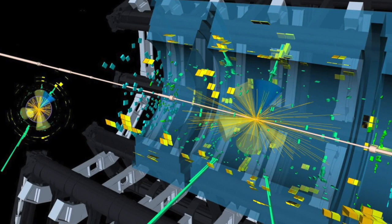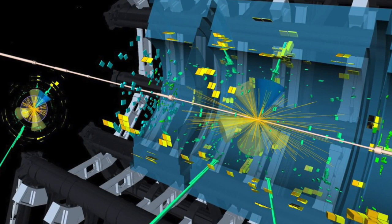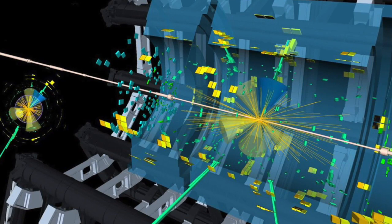Supersymmetric partners to currently known particles haven't been observed in experiments yet, but theorists think this is because supersymmetric particles are too massive to be generated using present-day high-energy accelerators.